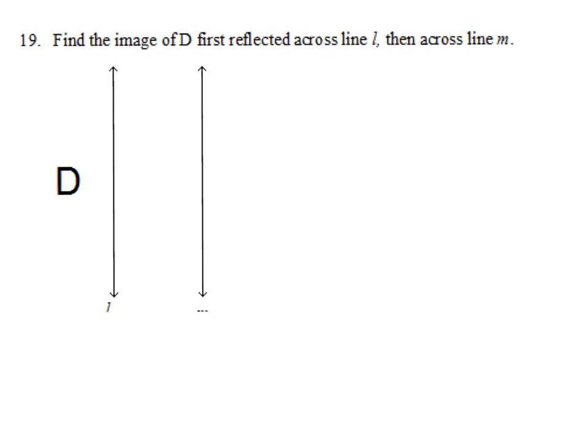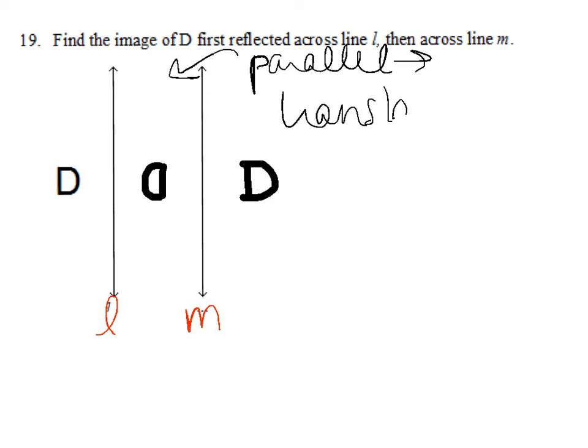Here, find the image of D first reflected across line L, then across line M. I'm going to take D and reflect it over L, then take it and reflect it across line M. What's important for you to know is that when you reflect over these two lines, because they are parallel, that tells me that I really just have a translation. And the distance that I've moved is 2 LM. Whatever the distance is between these lines, we have moved double that.